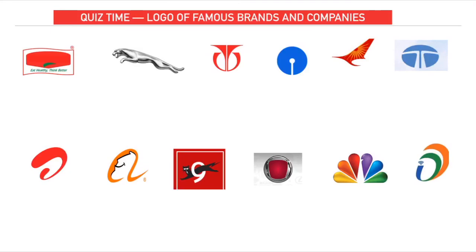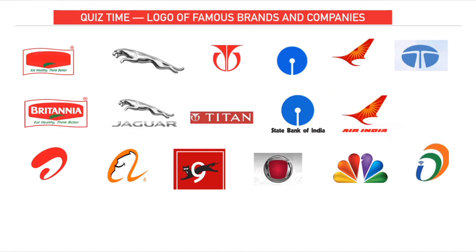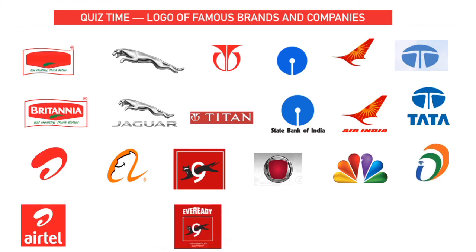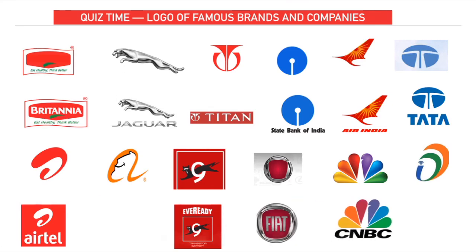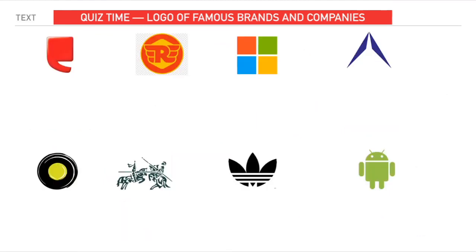Quiz round one: First is Britannia. Second is Jaguar. Third is the watch company Titan. Fourth is the financial sector — SBI, State Bank of India. Fifth is Air India. Sixth is Tata. Seventh is Atoll. Eighth is Alibaba Group, which is a competitor to Amazon. Ninth is Ever Ready Battery. Tenth is the car company Fiat. Next is CNBC channel. And last is Digital India.